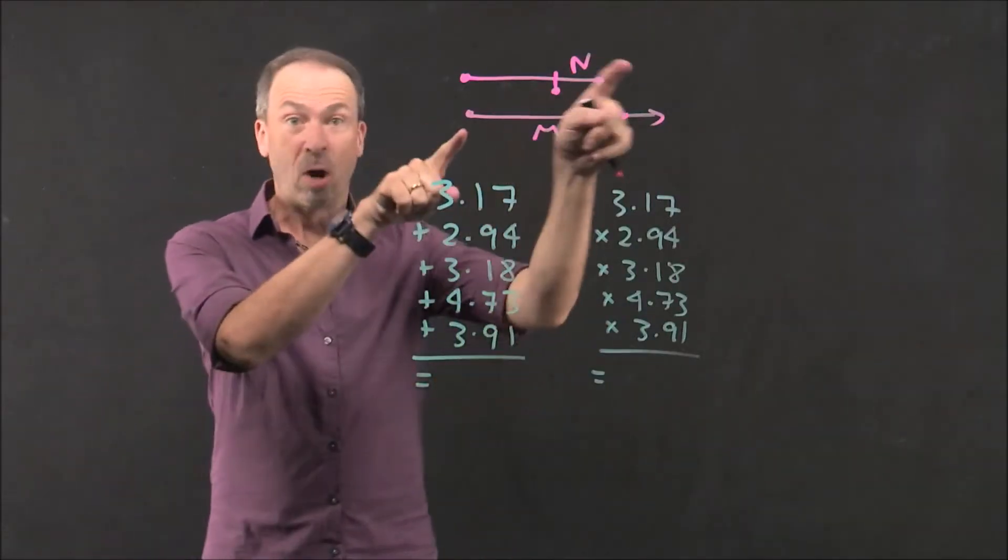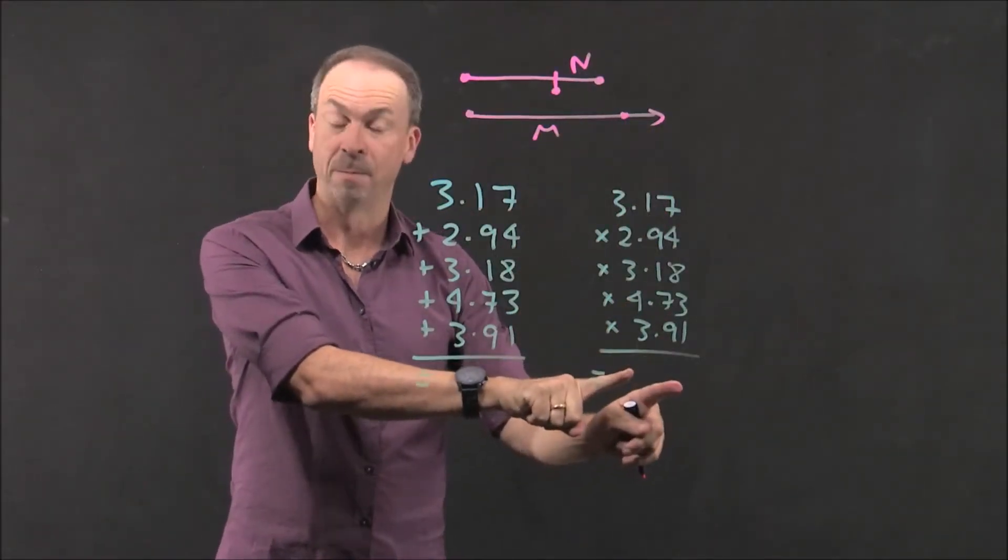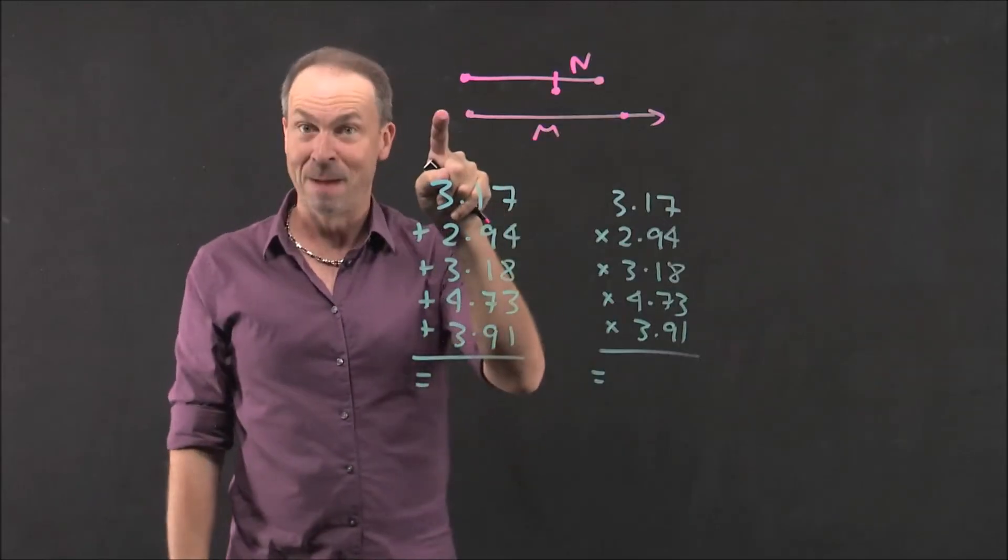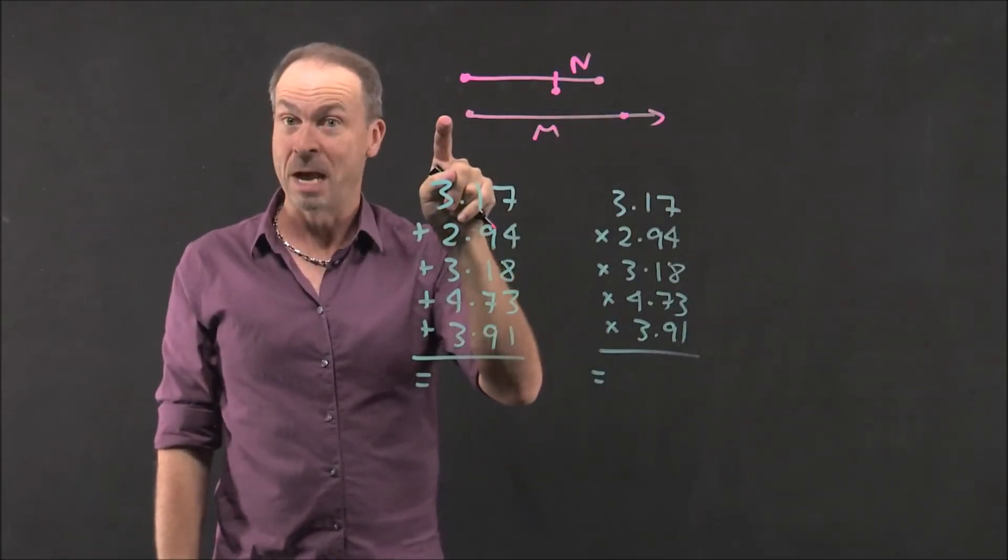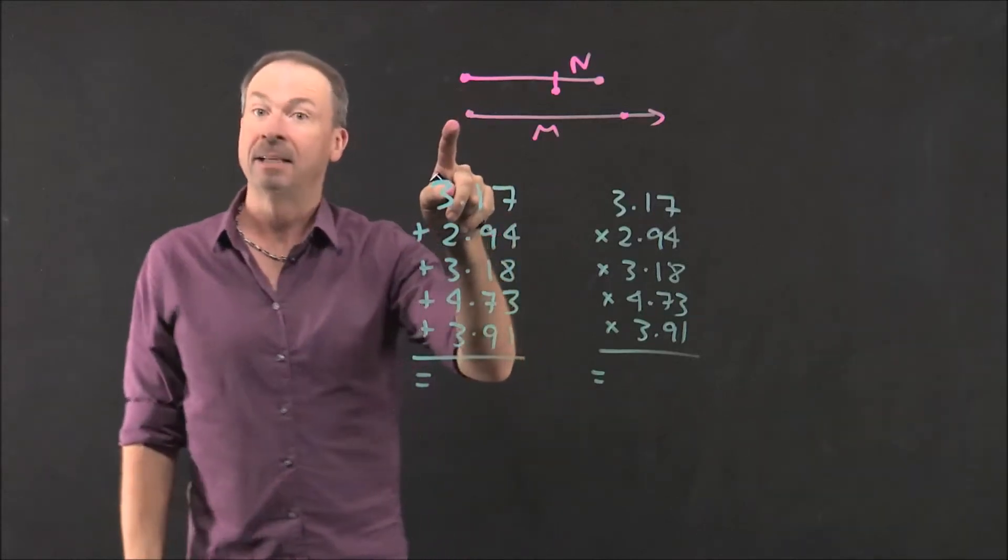So these logarithms, this very complicated theory, did in fact turn multiplication problems into addition problems. The trouble is, his method was bizarre and not many people understood what he was doing. Next problem. How can he make his method accessible to scientists?